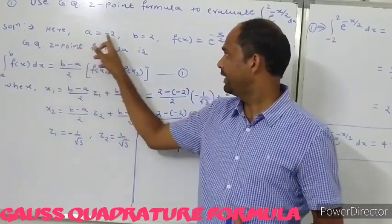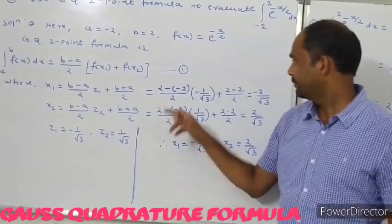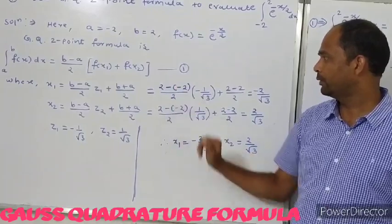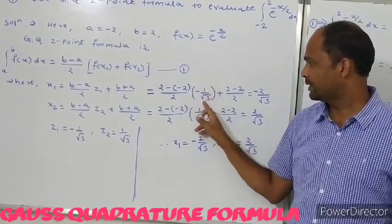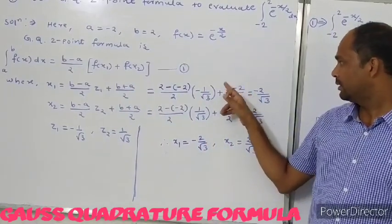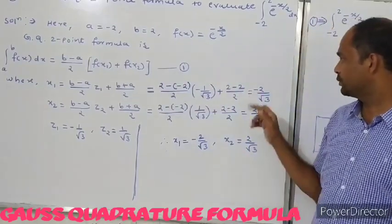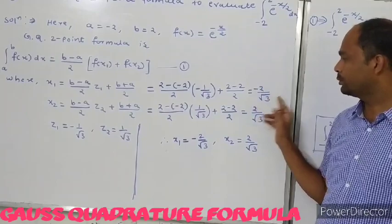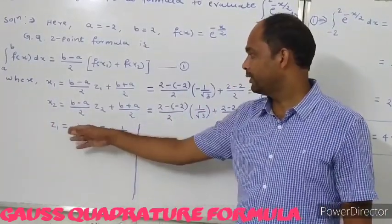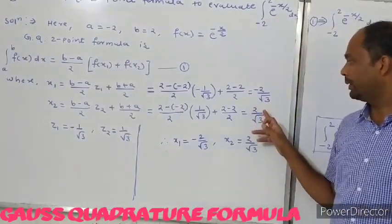Substituting a equals minus 2, b equals 2, and z1 into the formula for x1, we get: (2 minus (minus 2)) upon 2 times (minus 1 by root 3) plus (2 minus (minus 2)) upon 2. After solving this, the value of x1 is minus 2 by root 3. Similarly, using z2, the value of x2 is 2 by root 3.